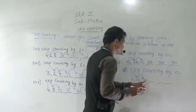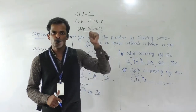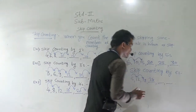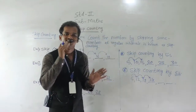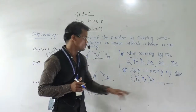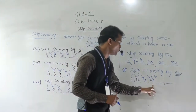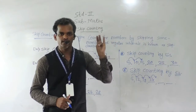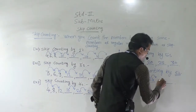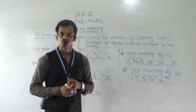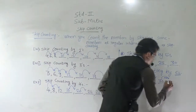Again add 6 into 18: 19, 20, 21, 22, 23, and 24. Here we are adding 6 every time because this is skip counting by 6 — every time we skip 6 places and write the next number. 24 plus 6: 25, 26, 27, 28, 29, and 30. Then again add 6 into 30: 31, 32, 33, 35, and 36.